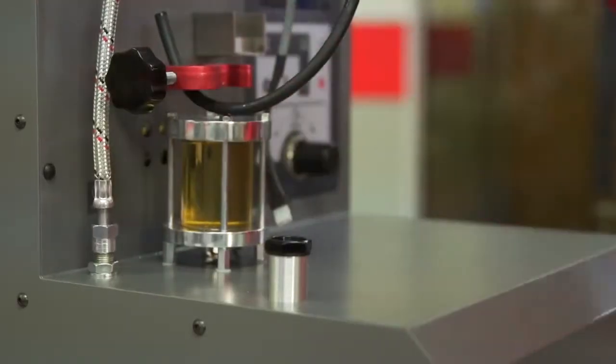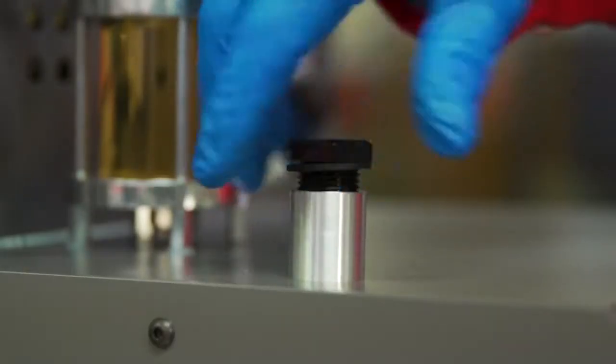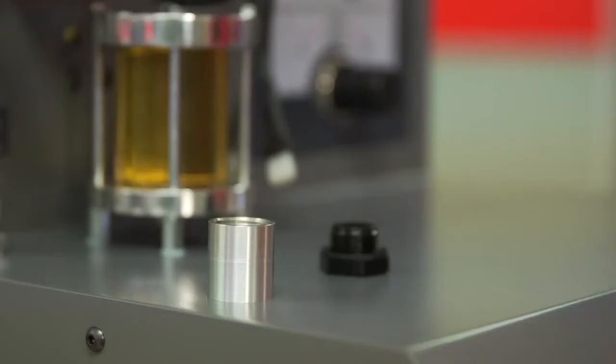Once you have your personal protective equipment on, the next step is to pour through the filler neck until the level is visible in the sight glass.